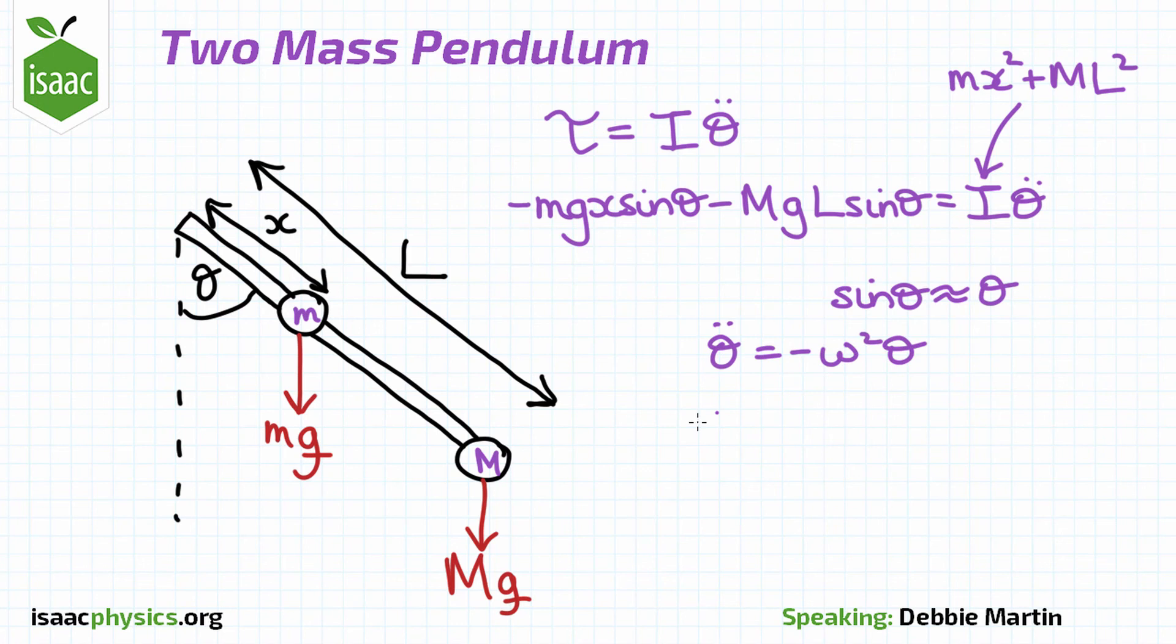We can use this to give us an expression for omega and finally use T equals 2 pi over omega to find the time period.